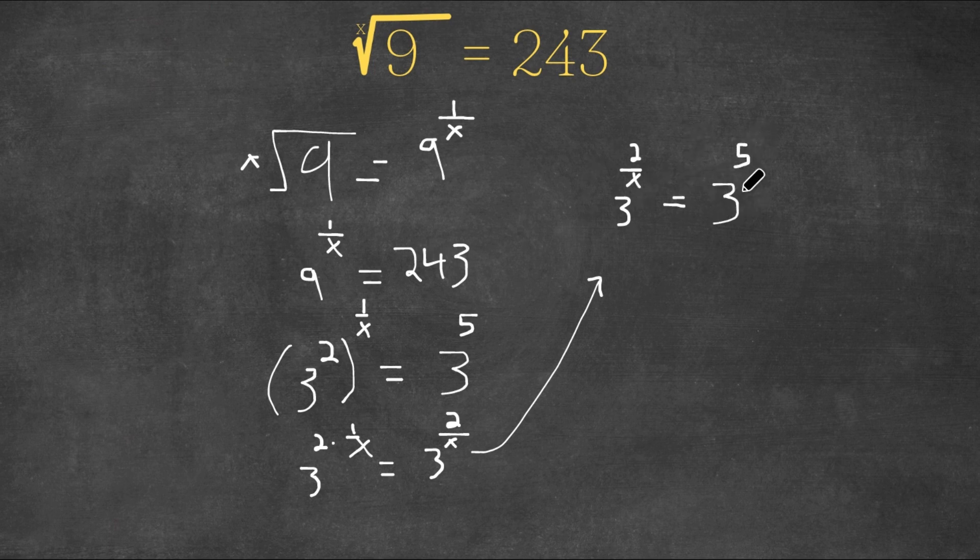And now that both sides of our equation here have the same bases, we could just ignore these bases and focus on our exponents. We could just make our exponents equal each other. Because our bases are the same, our exponents have to be the same. So we're going to write 2 over x equals 5.